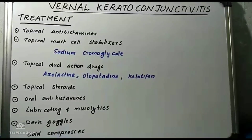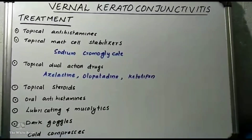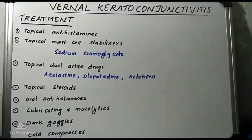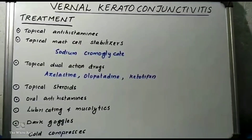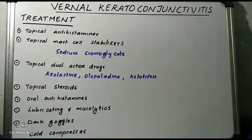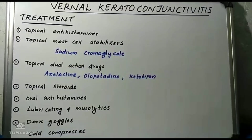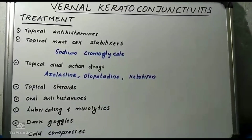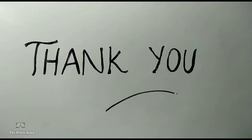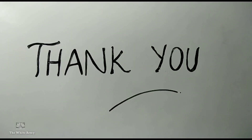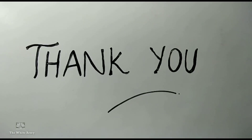In case of shield ulcer, antibiotics and steroids are also used. Supportive measures such as dark goggles to prevent photophobia and cold compresses for a soothing effect are also used in the management of vernal keratoconjunctivitis. That covers the two important conjunctivitis conditions, namely trachoma and vernal keratoconjunctivitis. Thank you.